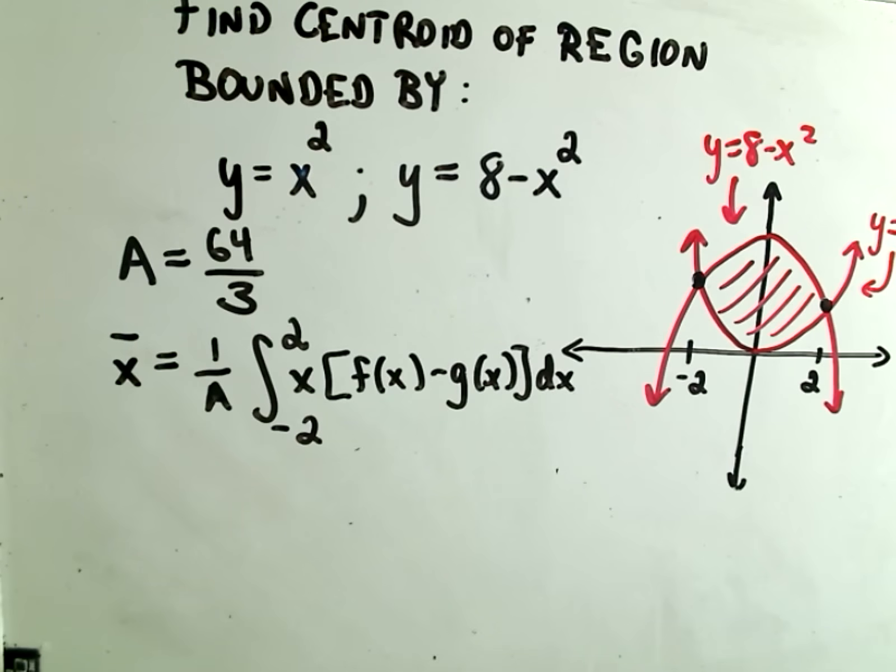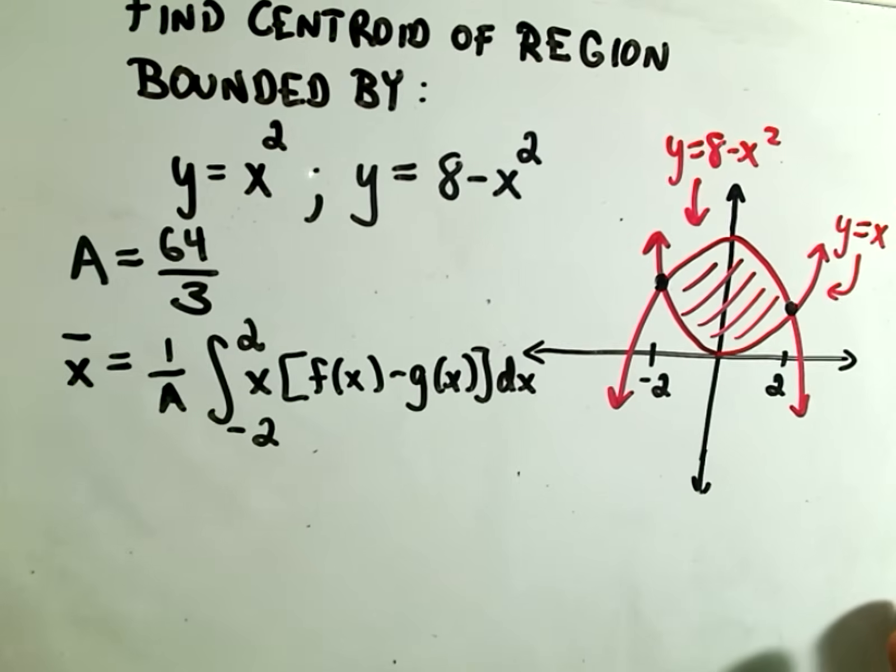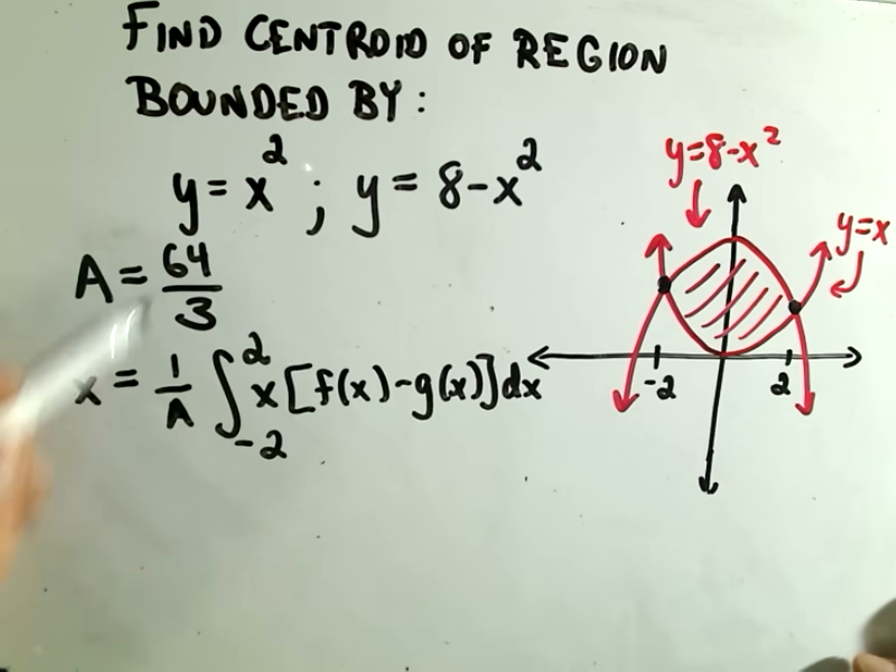In this part I'm going to finish off my centroid problem. In the first part we calculated the area bounded by this region x² and 8 - x². We came up with that being 64/3.